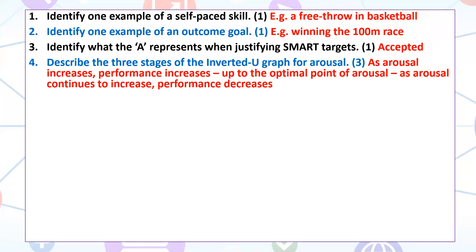Now when we're looking at arousal, there's the inverted U graph and I wanted you to describe the three stages. The first stage: as arousal increases, performance increases. It's always about what's going on with arousal and how that influences performance. As arousal increases, performance increases up to an optimal point — meaning the perfect point of arousal and skill. And then beyond that, as arousal continues to increase, performance decreases. That process applies to any skill in sport, whether it's a high arousal skill such as a tackle in rugby, or a low arousal skill such as throwing a dart.